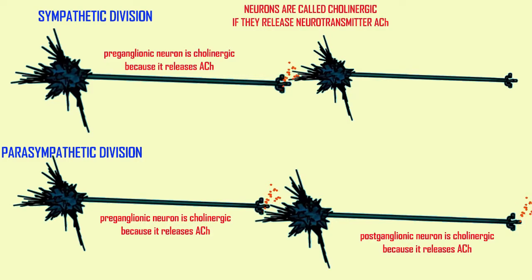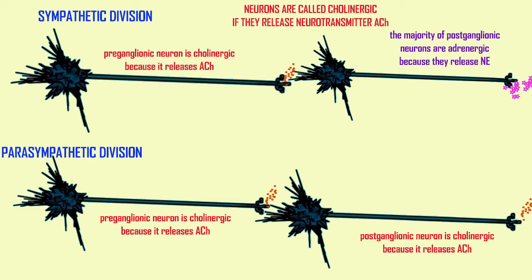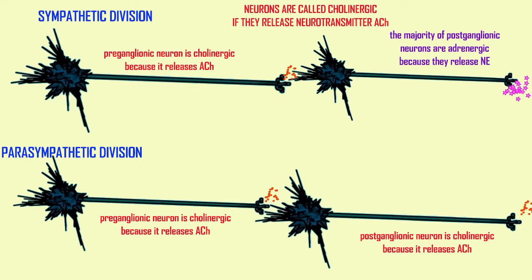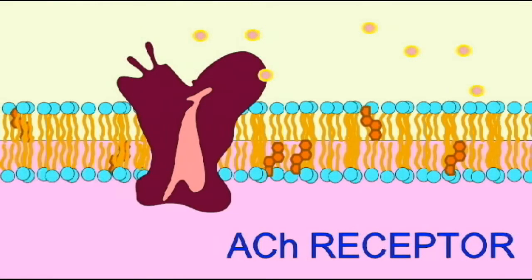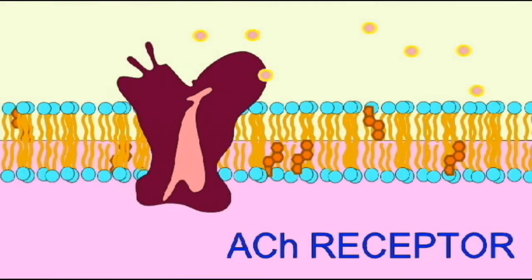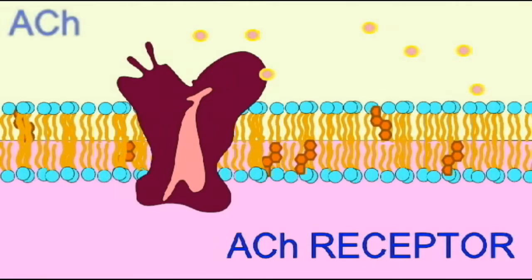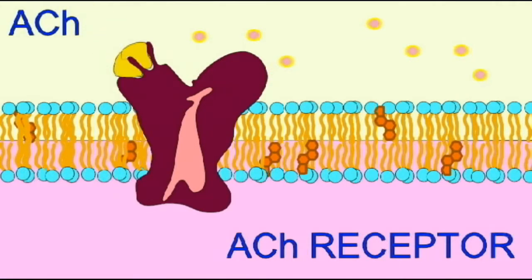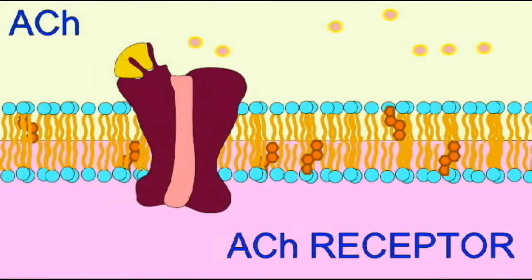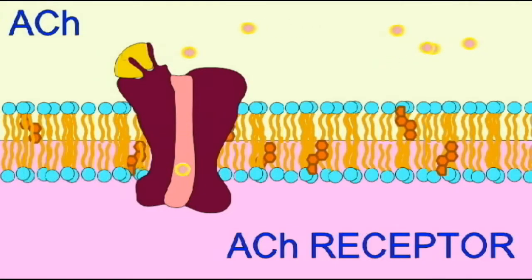Neurons which produce norepinephrine are referred to as adrenergic. The post-ganglionic neurons in the sympathetic division — the majority of them — are adrenergic because they release norepinephrine.